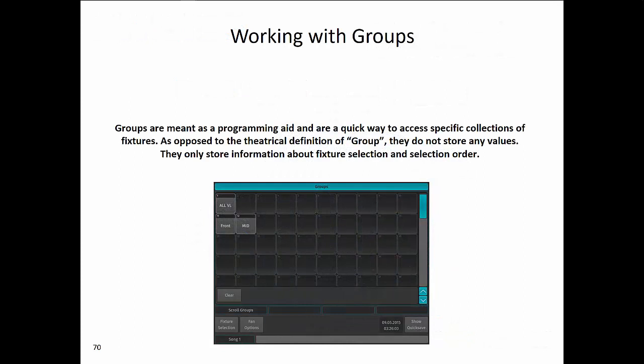Groups are meant to be a programming aid and are a quick way to access specific collections of fixtures. This is opposed to the theatrical definition of groups, as they do not store any values. The 500ML groups only store information about fixture selection and selection order.